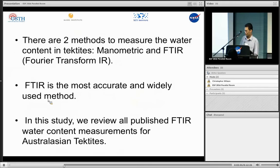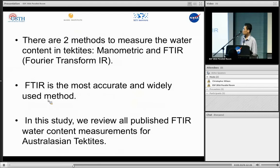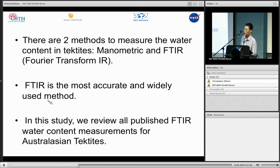To determine the water content in tektites, there are two methods. The first is the manometric method: you heat the sample to convert water into vapor, collect the gas, and measure its volume to derive the water concentration. The second method is Fourier Transform Infrared Spectrometry (FTIR): you shine an infrared light beam through the sample and measure the absorption spectra; from the absorption intensity you derive the water concentration. FTIR is the most accurate and widely used method. In this study, we reviewed all published FTIR water content measurements for Australasian tektites.